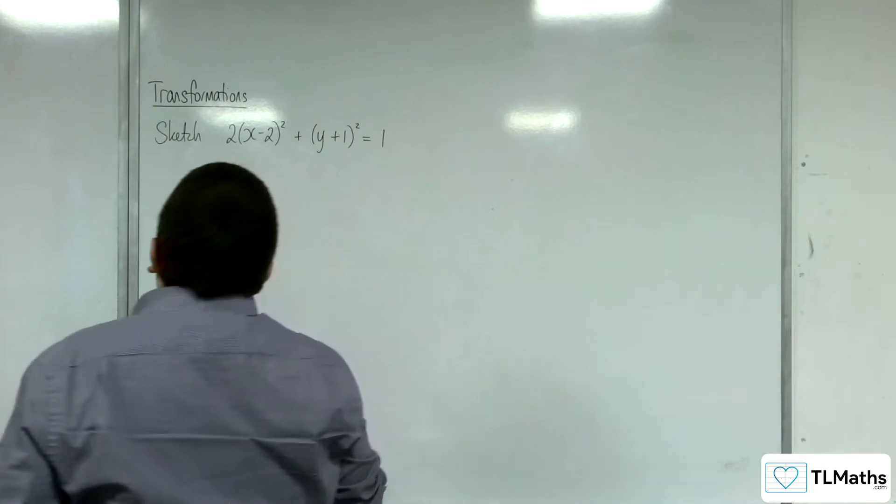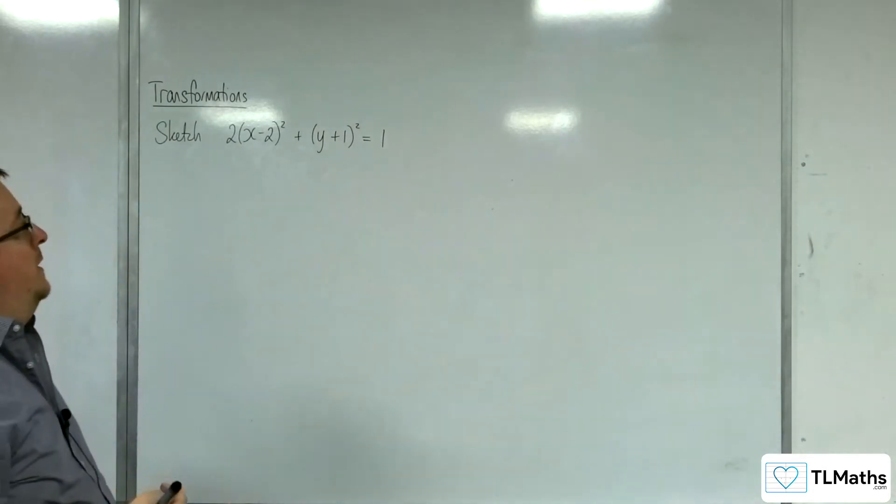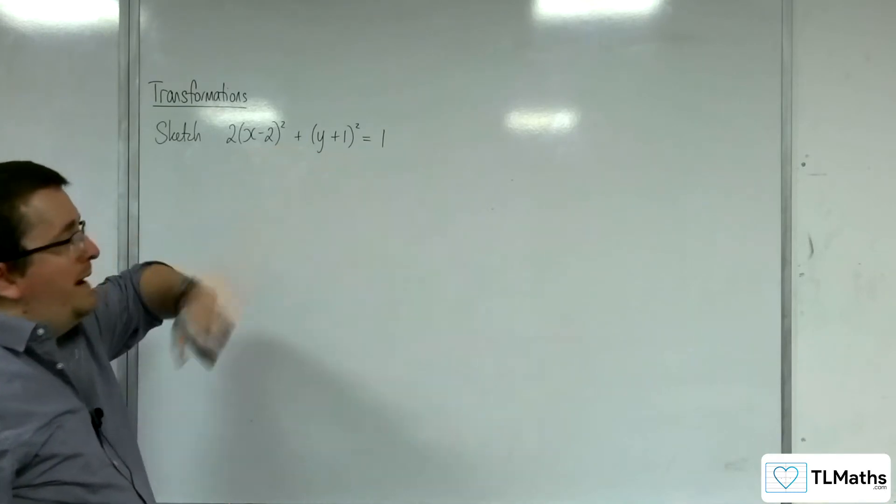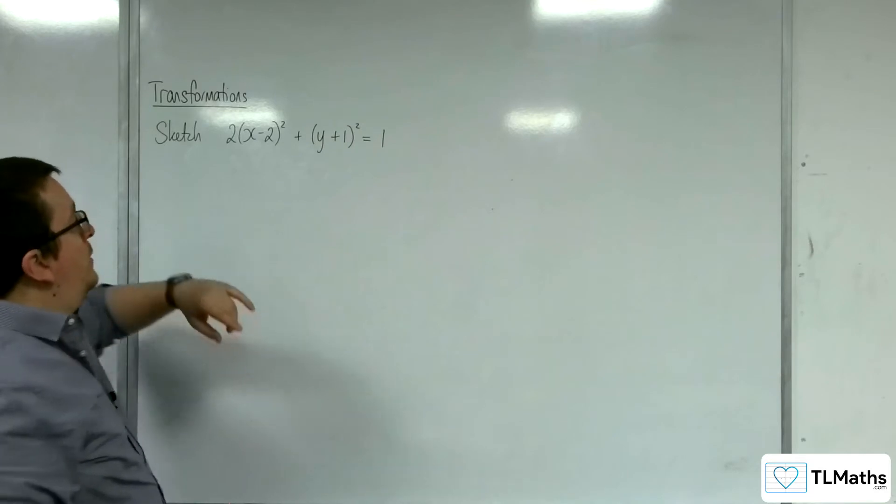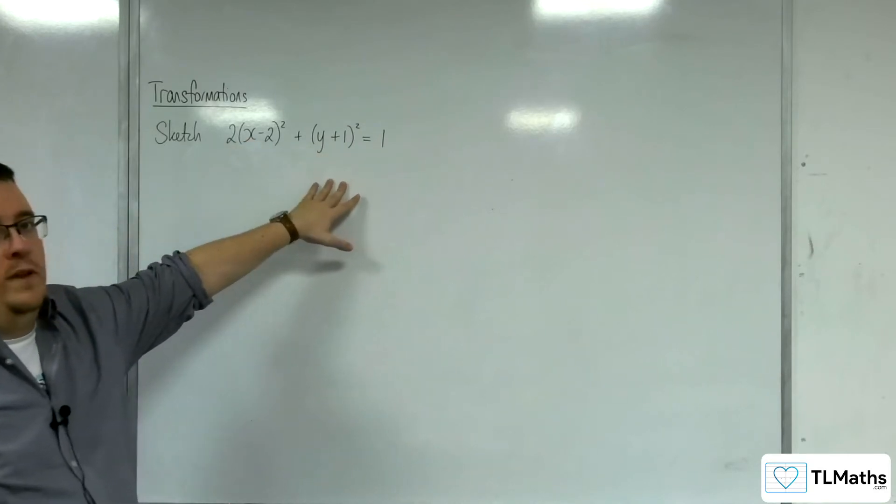If the curve had been 2x² + y² = 1, that would have been easy to sketch. But now we've got (x-2) and (y+1), which means the center is now located at (2, -1), in precisely the same way as you would deal with a circle.